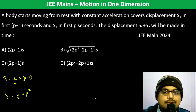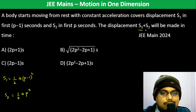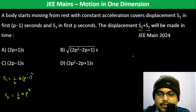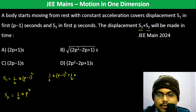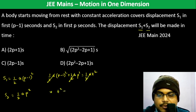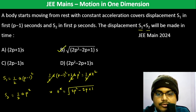The combined displacement s1 plus s2 is set up as: ½a(p−1)² plus ½ap² equals ½ap². After algebraic simplification, expanding (p−1)² gives t² becoming 2p²−2p+1, and t becomes root p.